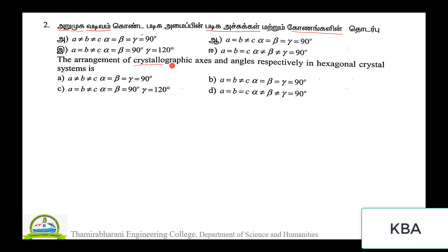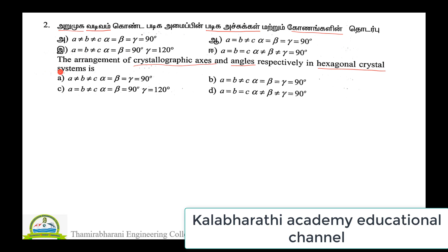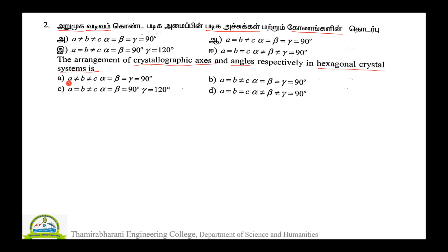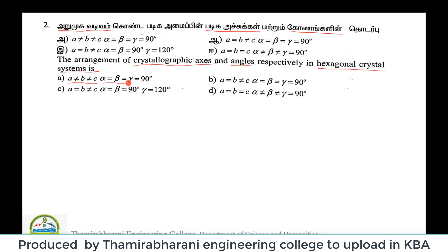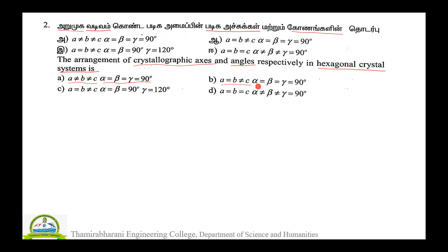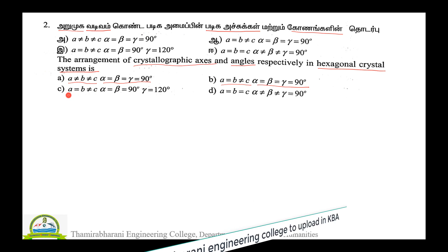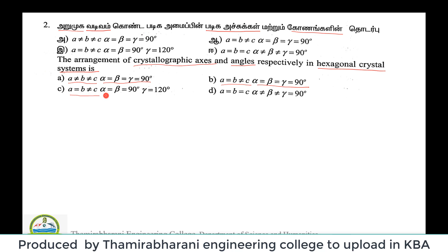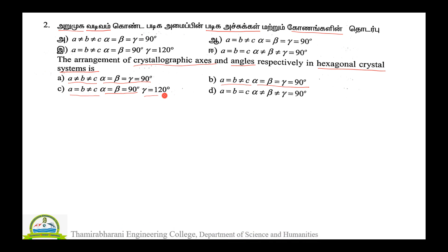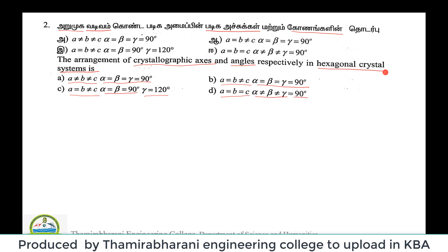In English, the arrangement of crystallographic axis and angles respectively in hexagonal crystal system is: Option A — a ≠ b ≠ c, α = β = γ = 90°. Option B — a = b ≠ c, α = β = γ = 90°. Option C — a = b ≠ c, α = β = 90°, γ = 120°. Option D — a = b = c, α ≠ β ≠ γ ≠ 90°.